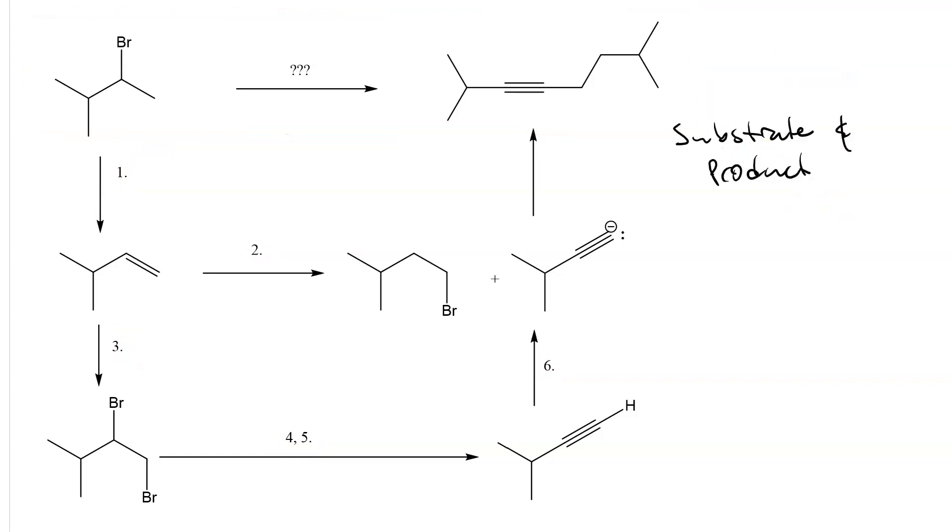For each step, look at the substrate and the product. Compare them. See what has changed. Analyze the regio and stereochemical outcome and you will be able to see what reagent you need. That is provided you understand the one-step synthesis for both alkenes and alkynes.